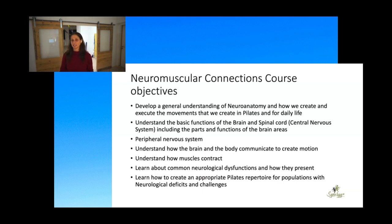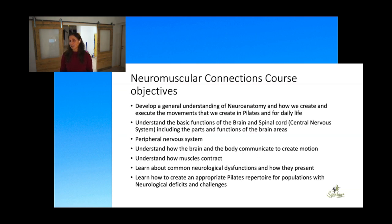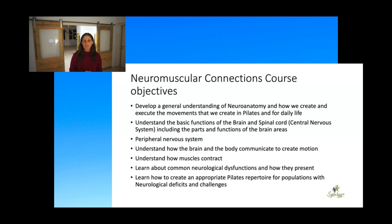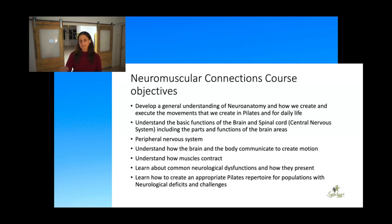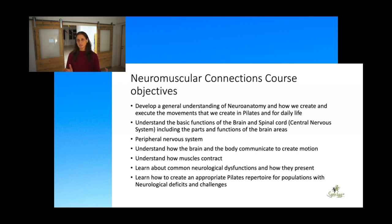We want to understand the basic functions of the brain and spinal cord — our central nervous system — and talk through what the parts and functions of the brain areas are, so that when something goes wrong you have an idea of what we might be talking about. We'll also cover the peripheral nervous system and understand how the brain and body communicate to create motion. There's also a segment on muscles in our second module.